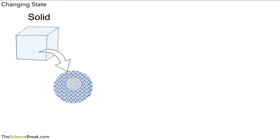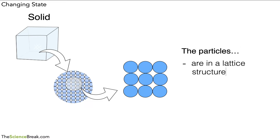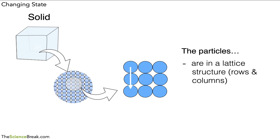Let's magnify a little bit more. So we're going to take a look at just a few of those particles. The first thing to remember is that the particles are in a lattice structure — that means they're in rows and columns. We can see the rows and columns in our diagram, and we describe that as being in a lattice structure.